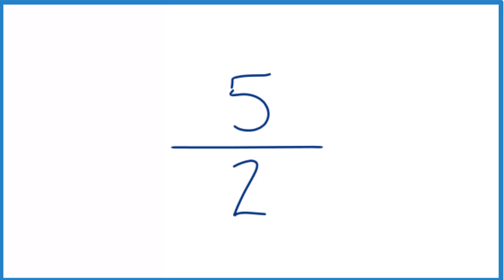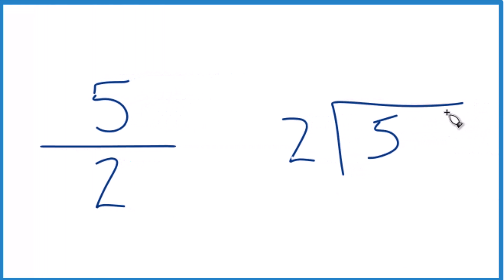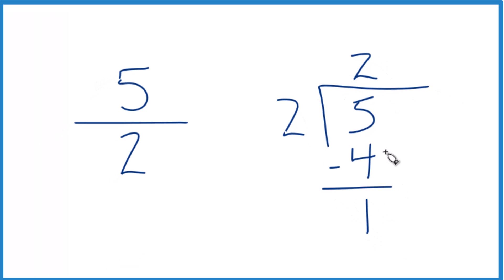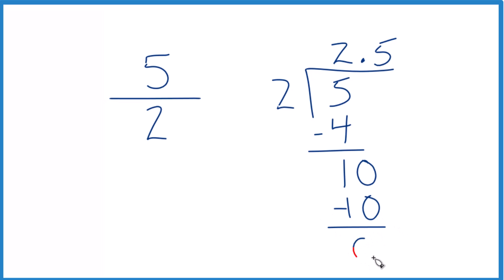We could also do it longhand. We could take 5, see how many times 2 goes into 5. 2 times 2, that's 4, subtract and we get 1. So we can't go into 1, but if we put a decimal point here, we can call it 10. 5 times 2, that's 10, subtract, no remainder.